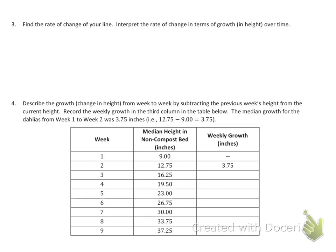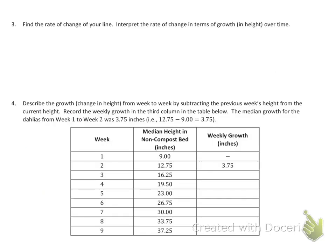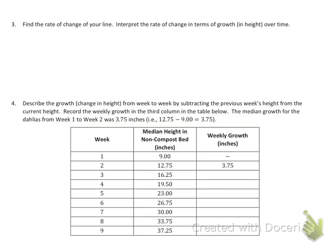Exercise three asks us to find the rate of change of the line and interpret it in terms of growth in height over time. To find the rate of change, we choose a couple of points anywhere on the line. I can choose any two points and the result should come out very similar. I'll use week three and week five. At week three, the point is (3, 16.25), and at week five we have 23 inches.